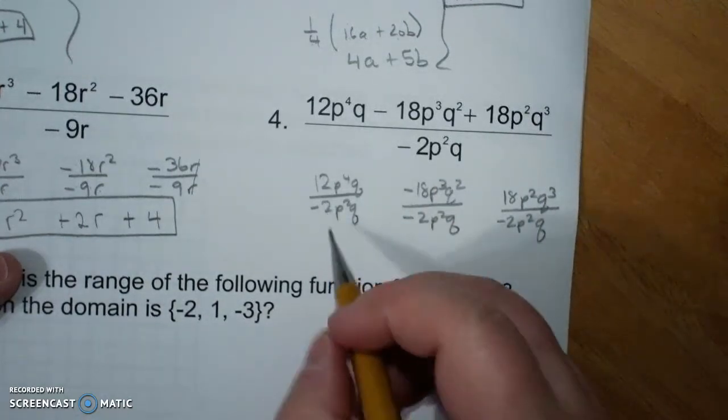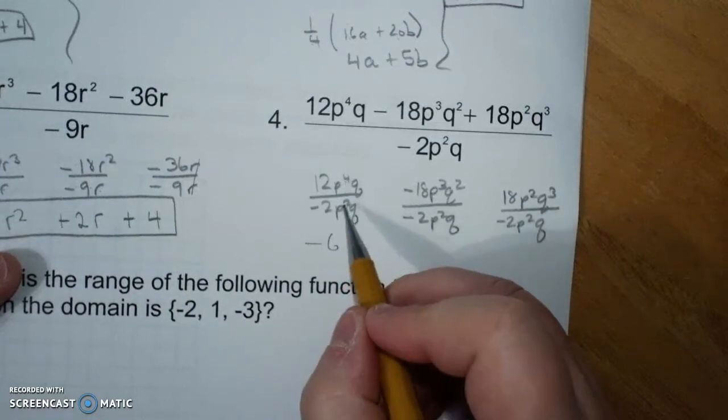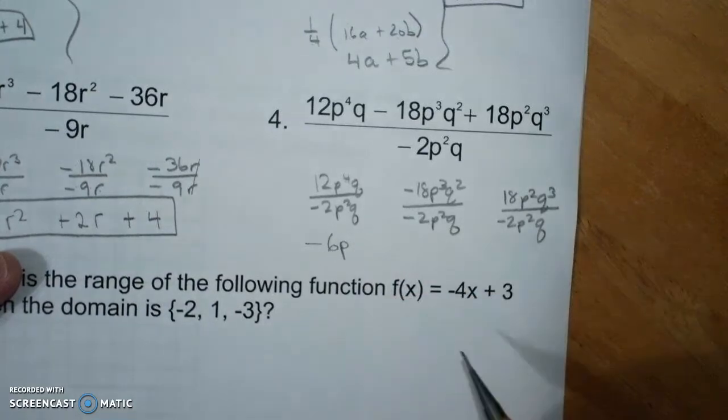Now, notice p cubed and p squared do not combine. Positive divided by a negative is a negative. 12 divided by 2 is 6. Four there, two there, 2 stays. Q's cancel out.